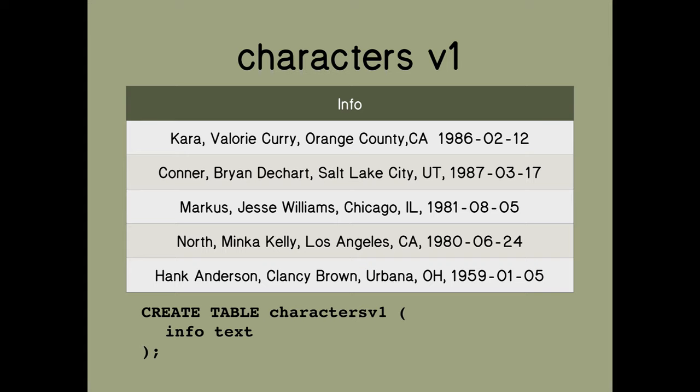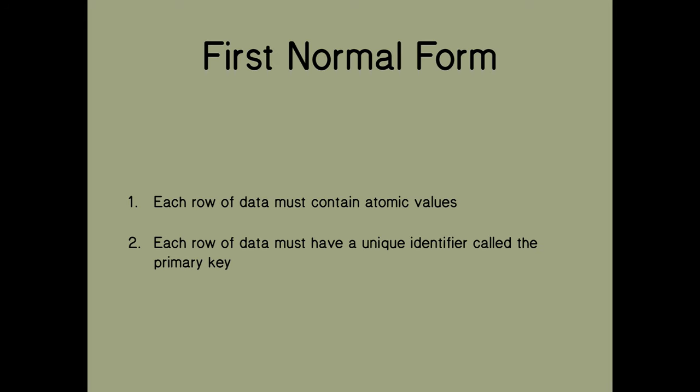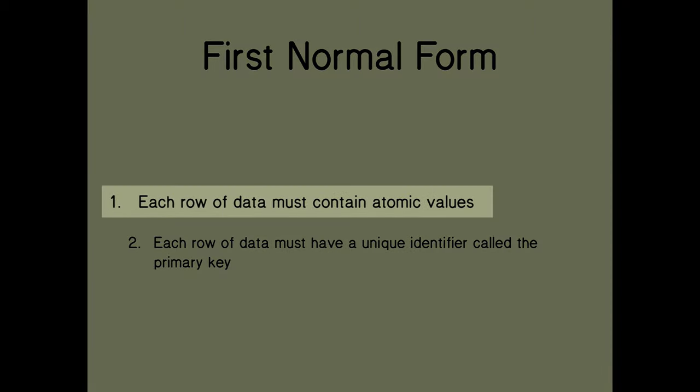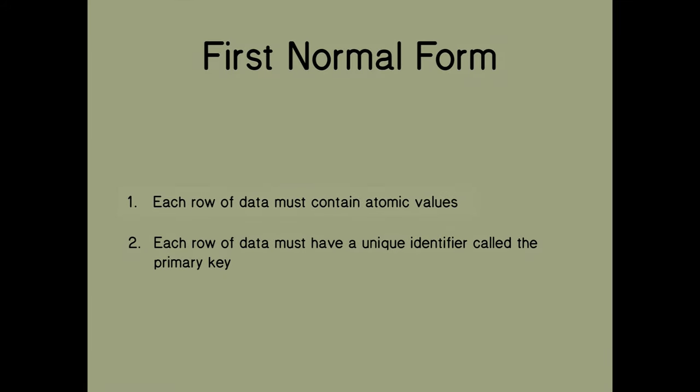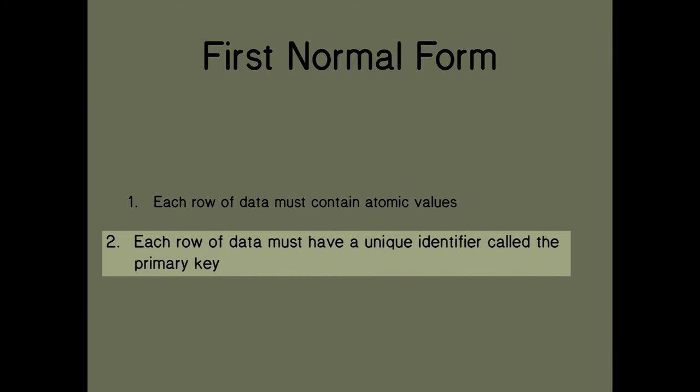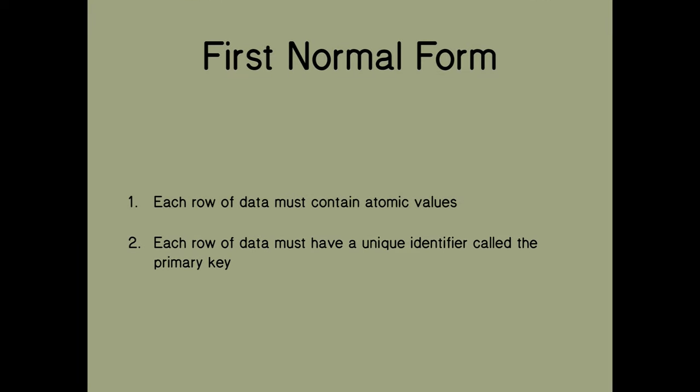But what is a good way? A guy named Edgar Codd, one of the really big names in databases, came up with some guidelines way back in 1971 which he called database normalization. In this video we're going to talk about the first one, the First Normal Form, or 1NF. It's basically a design principle for databases and database tables. There are two rules for first normal form.